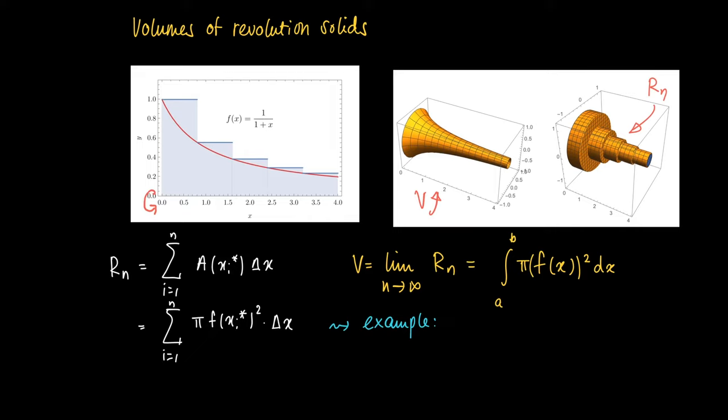In this example we find the volume of the revolution solid by integrating from 0 to 4: π times (1/(1+x))² dx. Since the primitive is given by -π/(1+x).